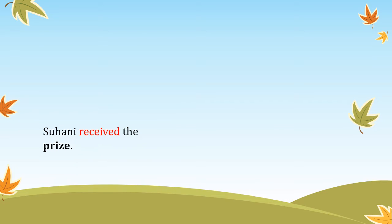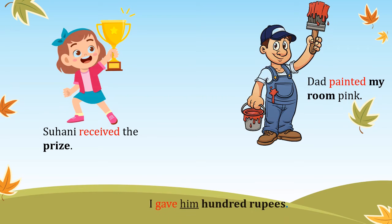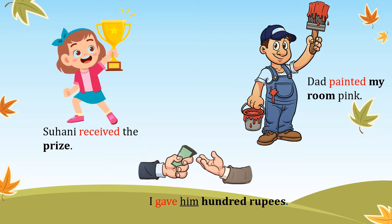Let us understand the concept of transitive verbs from the following sentences. 'Suhani received the prize.' 'Dad painted my room pink.' 'I gave him a hundred rupees.' In these sentences, the verbs received, painted, and gave need nouns like prize, my room, and hundred rupees to complete their meaning. In the third sentence, the verb 'gave' has two objects: 'him' is the indirect object and 'hundred rupees' is the direct object.